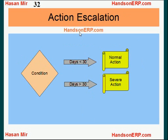There is also a feature available in Oracle Alert called action escalation. If an exception is found, you can choose to take one action for a certain duration of time, and after that duration, you can choose to take a different action. For example, if an exception is found, you can take one normal action, and after 30 days, if it is still appearing, then you can take some more severe action — such as changing the wording in an email after 30 days.